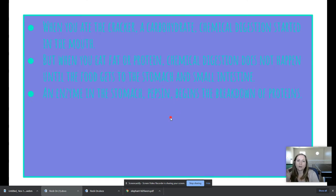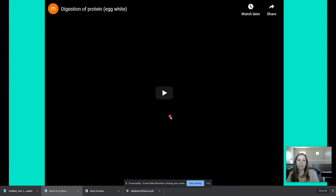So when you ate the cracker, which was a carbohydrate, chemical digestion started in your mouth. But when you eat fat or protein, chemical digestion does not happen until the food gets to the stomach and your small intestine. There's an enzyme in your stomach called pepsin. This begins the breakdown of proteins. So we know that the enzymes in our mouth broke down carbohydrates. There's another enzyme in our stomach that's going to break down proteins and it's called pepsin.